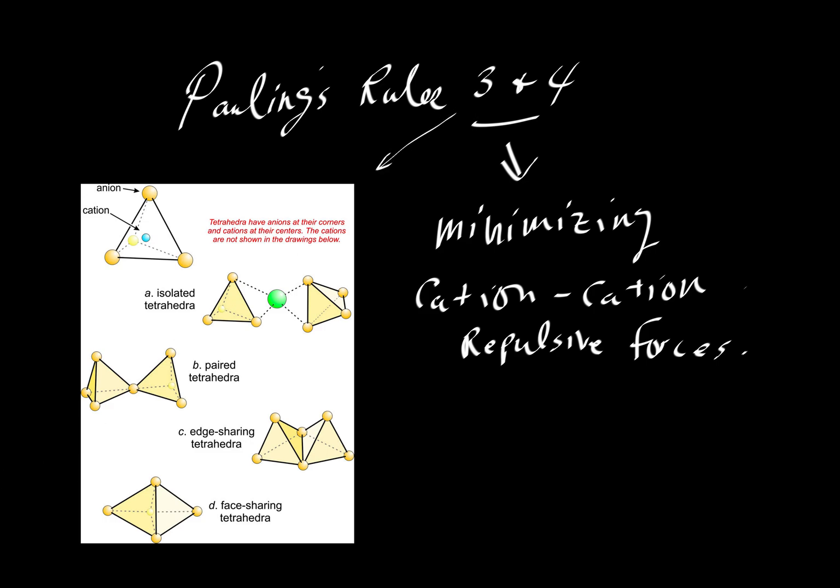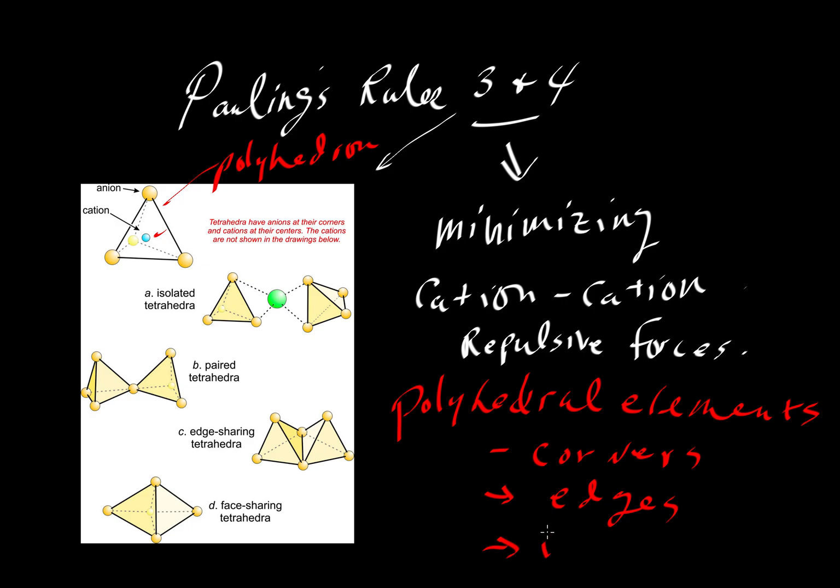Rule 3 is really about geometry. Here's a diagram from the online textbook by Dexter Perkins. And he shows a cation here in blue that is coordinated with four oxygen atoms. Now, those tetrahedra can share various polyhedral elements. This is referred to as a polyhedron. And then when we talk about so-called polyhedral elements, what we mean here are these are going to be the corners or edges or the faces of these polyhedron.